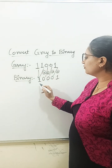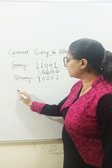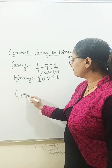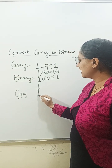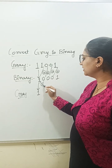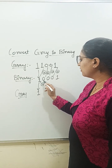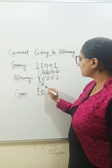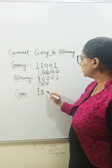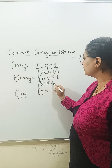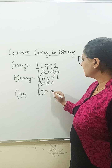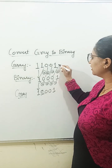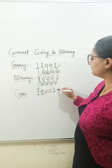So, this is the grey-to-binary conversion. And when you again convert binary to grey, then what do you do? First, keep it as it is and XOR with the neighbor. 1 XOR 0 is 1, 0 XOR 0 is 0, 0 XOR 0 is 0, and 0 XOR 1 is 1. So, now you will get the same number back.